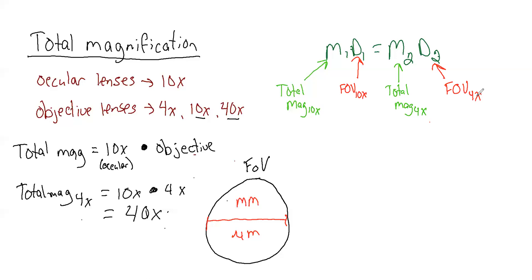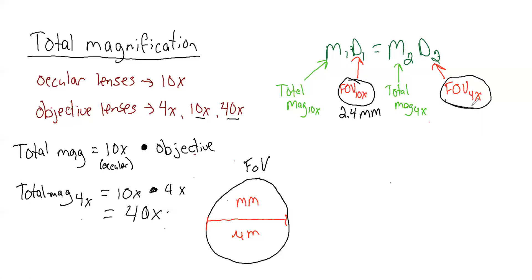We're going to measure very specifically the field of view value for 10x. In the lab, you will use the stage micrometer and actually count this. For this example, I'm just going to give you a made-up value — this is not what our actual microscopes measure. I'm going to say that our field of view at 10x is 2.4 millimeters. That 2.4 millimeters is what we'll use to solve for our unknown, which is going to be our field of view at 4x.